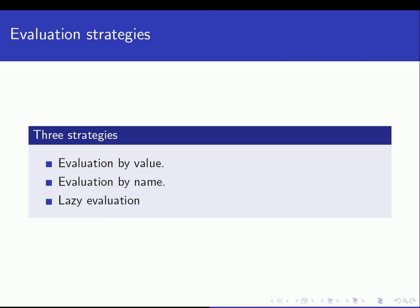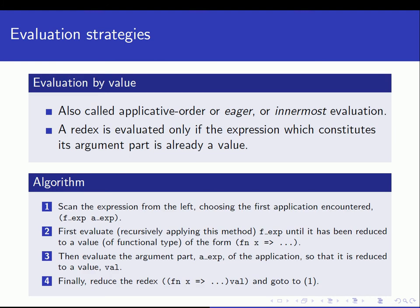Notice that this is something we talked about in the context of lambda calculus - we used the terms call by value and call by name. Lazy evaluation is actually just a variant of evaluation by name. Evaluation by value is often called eager evaluation, applicative order, or innermost evaluation.